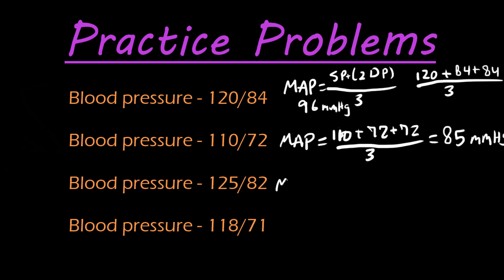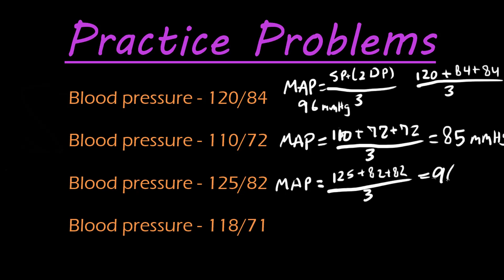Once again here, mean arterial pressure is equal to 125 plus 82 plus 82, divided by three, and you should get 96 millimeters of mercury.